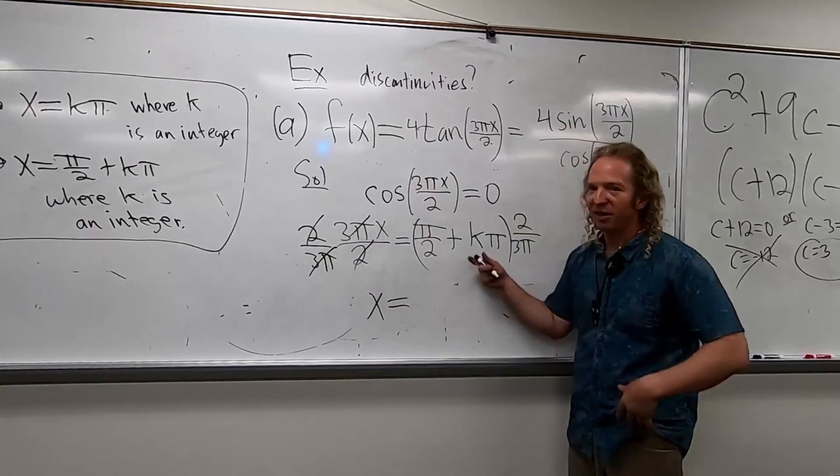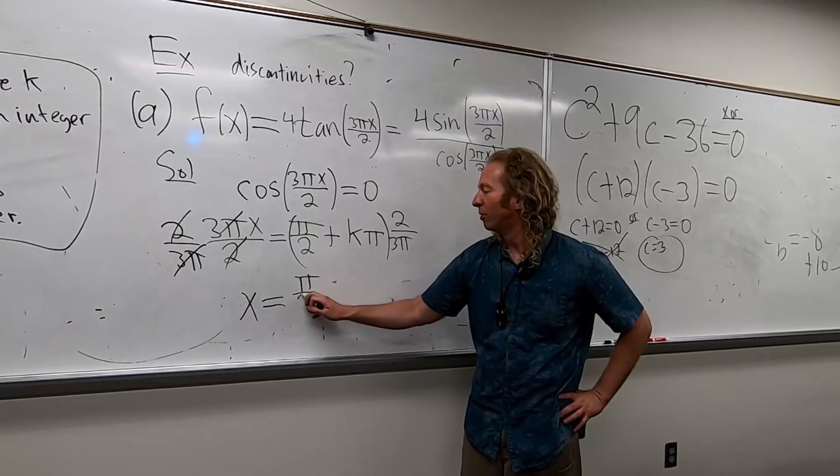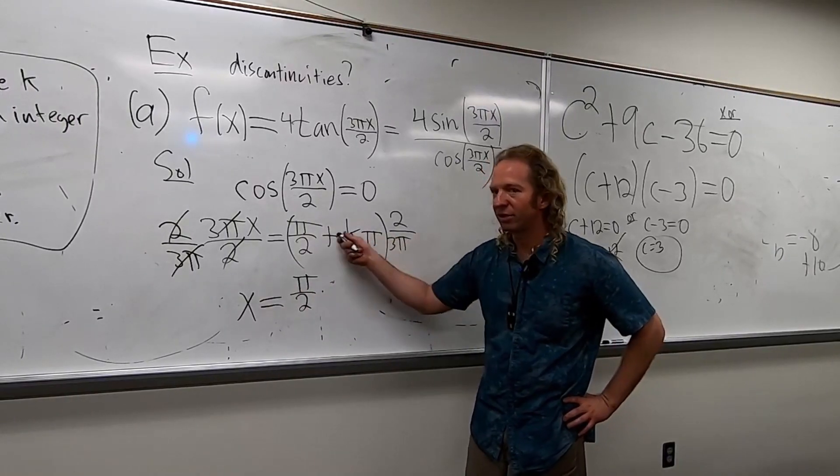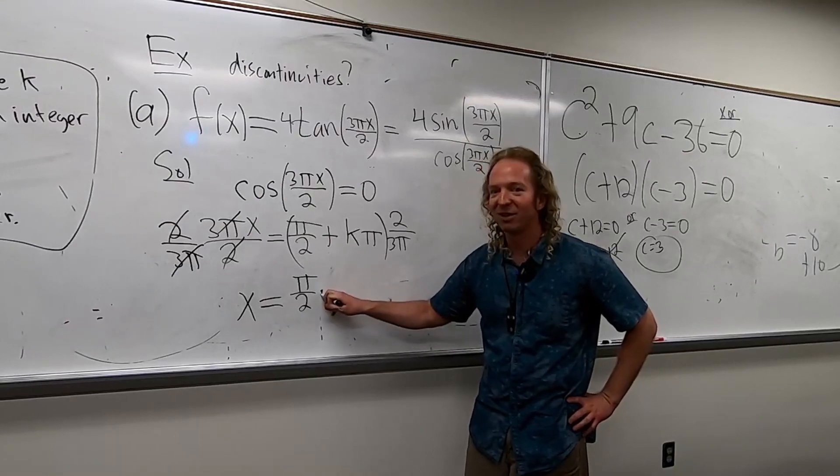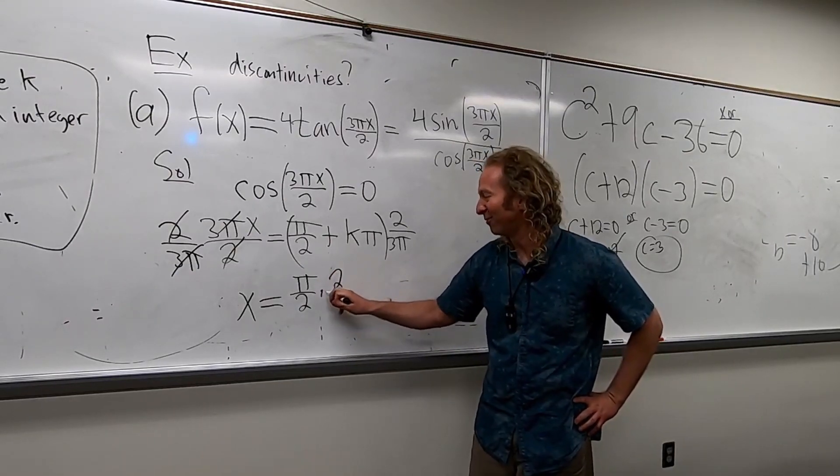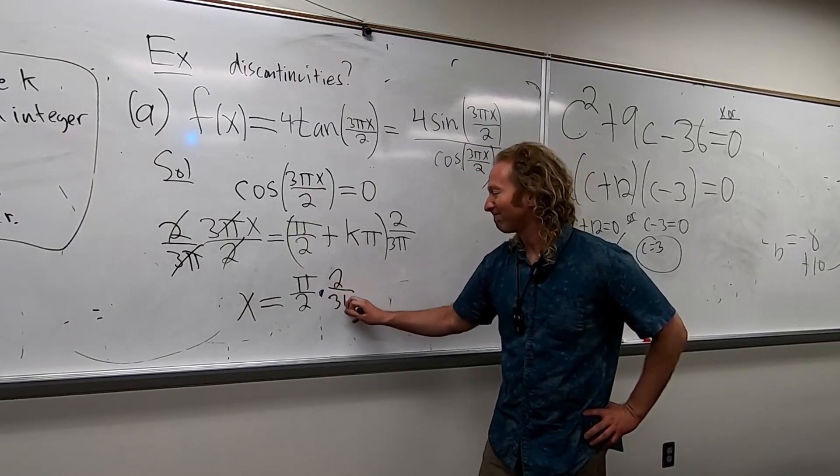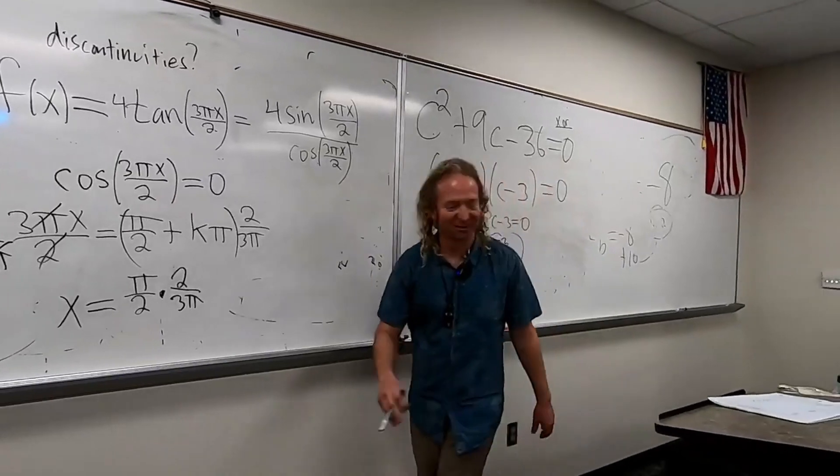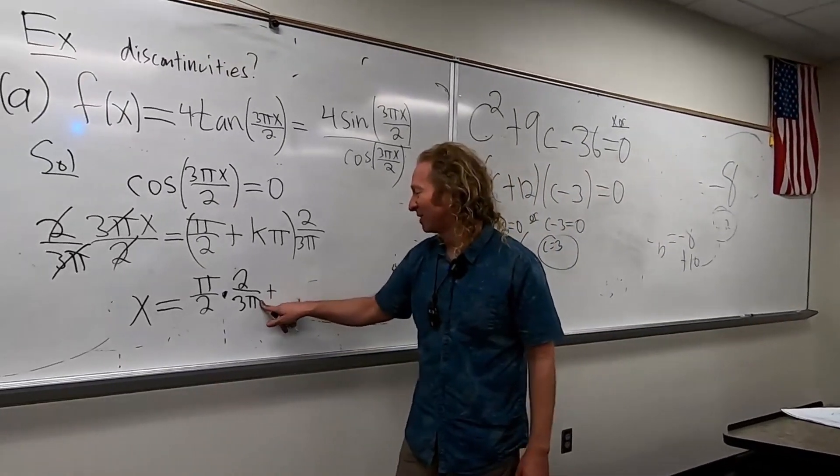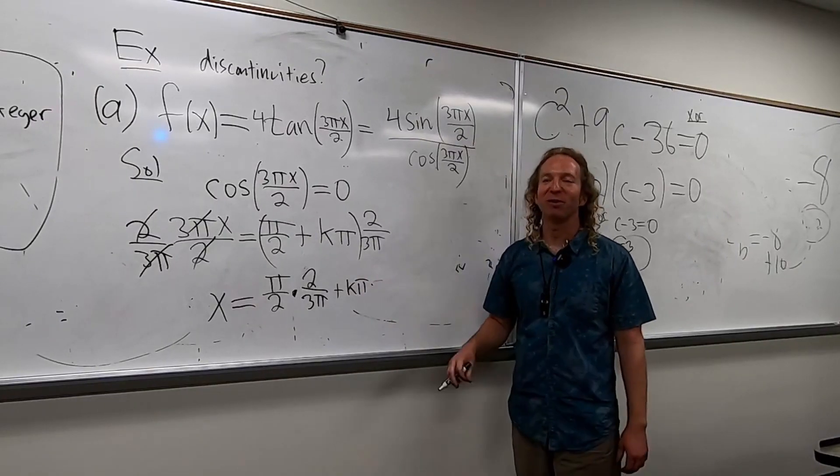This is equal to... And again, you can skip steps. I won't do it. But you can. Pi over 2 times... Let's distribute this to each piece. Times 2... I'm starting to fade. 2 over 3 pi. That's right. So far, so good. Plus... Pi is falling apart. Part k pi times 2 over 3 pi.